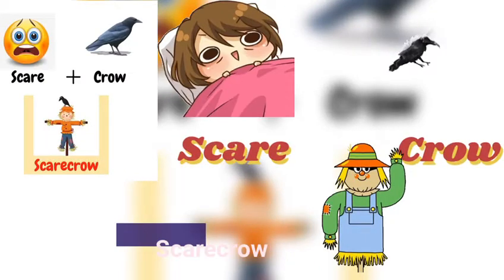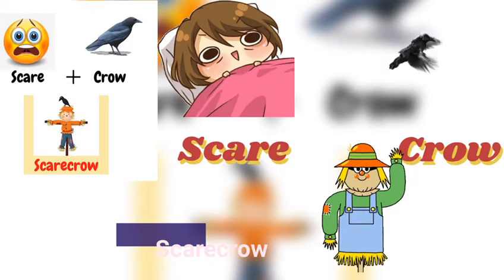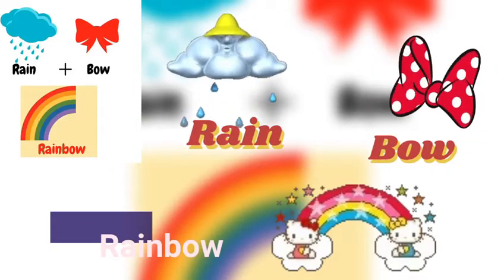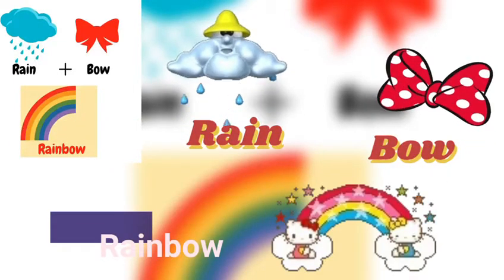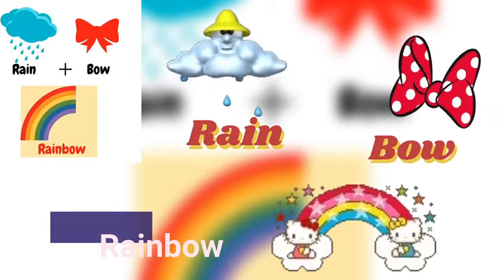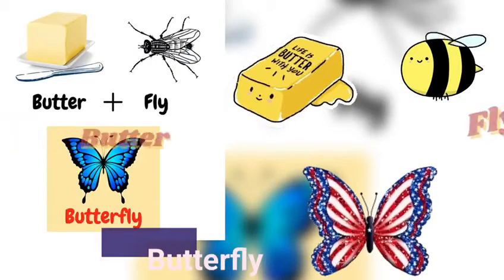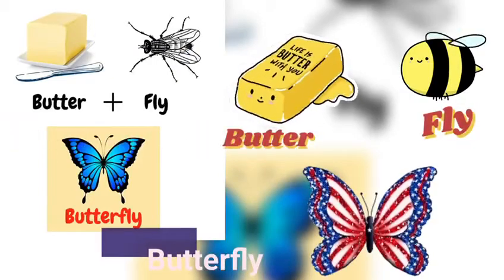'Scare' is one object, 'crow' is the second object — you connect them into 'scarecrow'. 'Rain' is one object, 'bow' is the second object — you connect them into 'rainbow'.